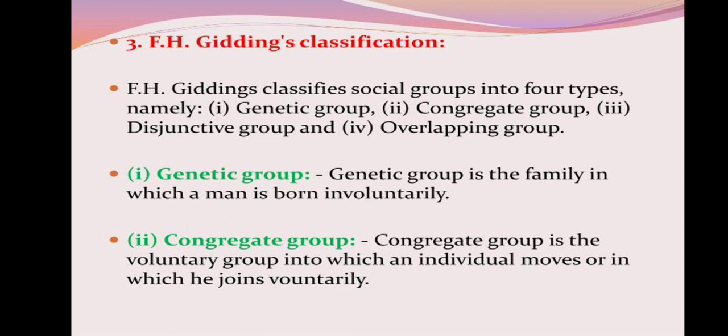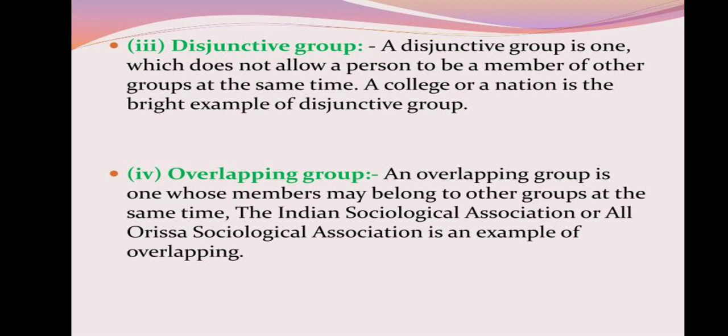FH Giddings classified social groups into four types: genetic group, congregate group, disjunctive group, and overlapping group. Genetic group means a family into which a man is born involuntarily. Congregate group is the voluntary group which an individual joins voluntarily. Disjunctive group does not allow a person to be a member of another group at the same time — a college or a nation is an example. Overlapping group is one whose members may belong to another group at the same time — sociological associations are examples.